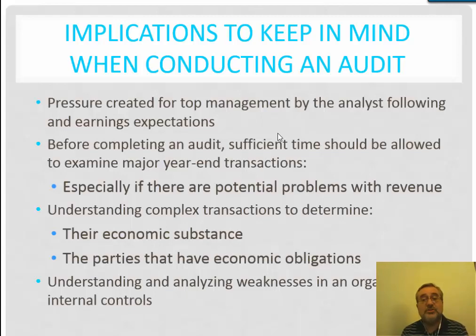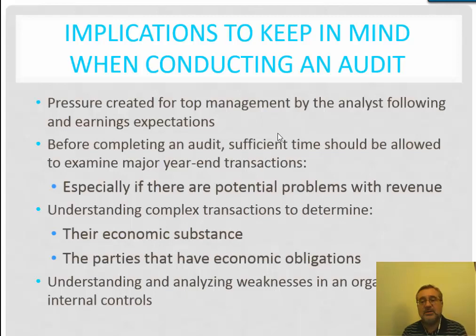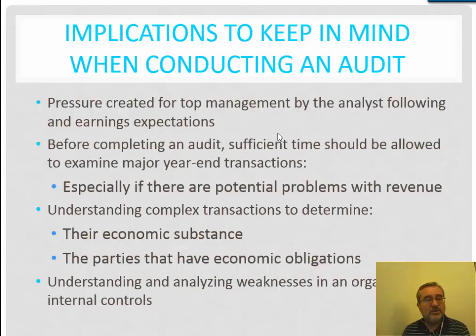We need to understand complex transactions to determine their economic substance and the parties with an economic obligation. Many organizations have complex transactions, and we need to understand whether these are true transactions reportable on the financial statements. Ultimately, we need to analyze weaknesses in internal controls. When looking at audit risk, we must understand the risk of material misstatement — part of which involves understanding the internal controls management has implemented to counteract the inherent risk of transactions, account balances, inventory, and assets.